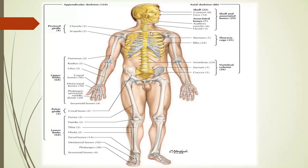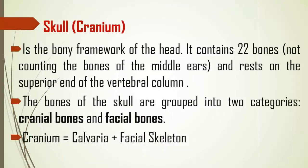Then we have the vertebrae — the vertebral column — which is made up of different parts. The skull is the bony framework of the head, consisting of 22 bones not counting the bones of the middle ear. It rests on the superior end of the vertebral column, making it the superiormost bone of the skeleton when standing.